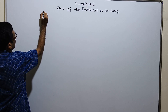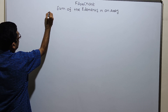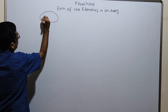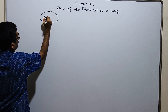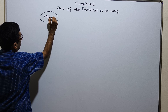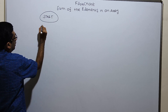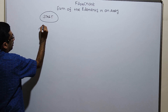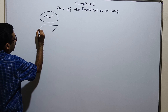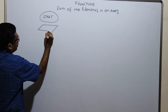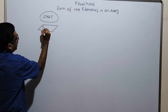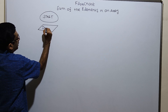This is the logical start of the flowchart. I am obtaining an input n for the array size.